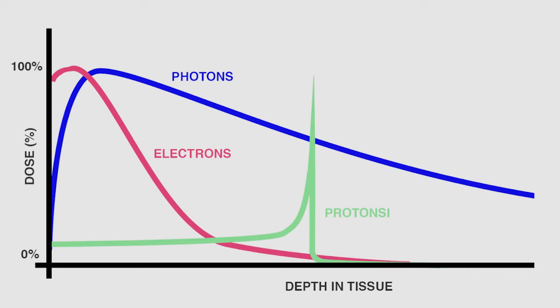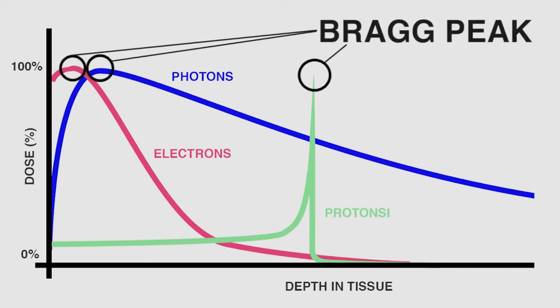By changing the energy of the proton particles, we can change how deep they travel and where they deposit energy. For a tumor volume, we can scan from the deeper portion to the more shallow portion by changing the energy. Behind the range of the particles, they deposit almost no energy, so the tissue behind the tumor volume gets almost no dose. I can scan through the tumor volume in a very controlled fashion, also laterally to cover the entire tumor, with very little dose to surrounding tissue, especially behind the tumor.